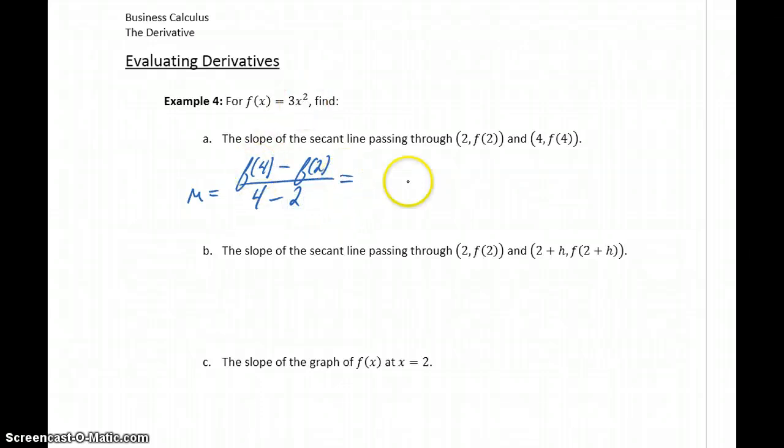So plugging 4 into our function will give us 48 minus f(2) will be 12, divided by 4 minus 2, or 36 over 2, giving us a slope of 18. So the average rate of change for our function 3x squared from x equals 2 to x equals 4 is 18.